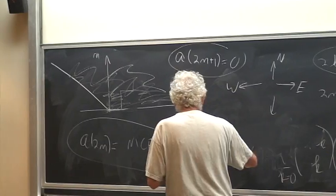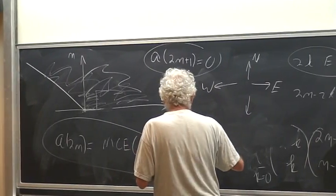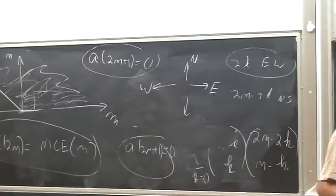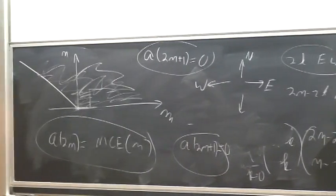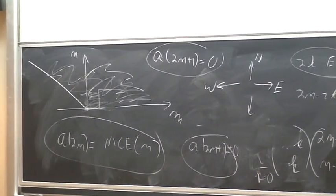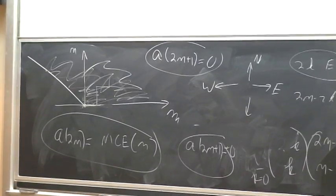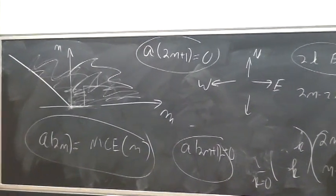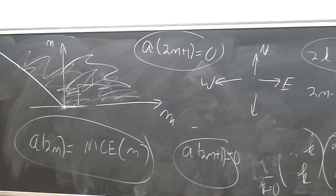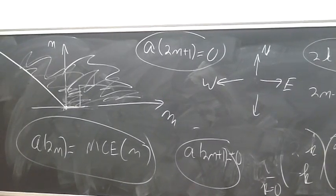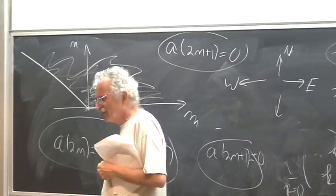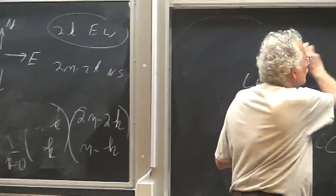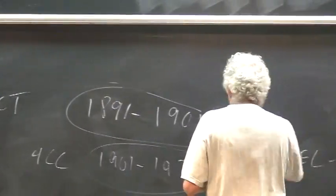Of course, for the same reason, the odd case gives zero. And nobody — not Ira Gessel, not Richard Stanley — could prove it. They tried very, very hard. They tried the old clever ways. They were too clever. So what I proposed to my two collaborators, who are great computer scientists, is to use the holonomic approach.